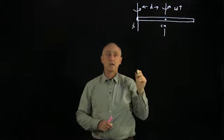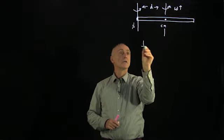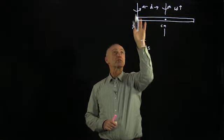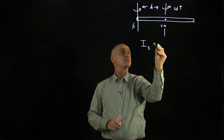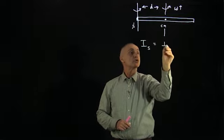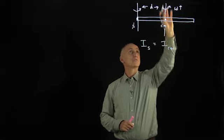Then the key result that we want is that the moment of inertia about an axis passing perpendicular to the plane of the object through the axis s is equal to the moment of inertia about an axis passing through the center of mass.